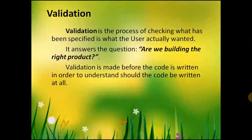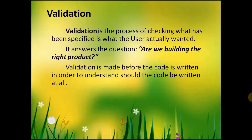Validation is the process of checking that what has been specified is what the user actually wanted. It answers the question: are we building the right product? Validation is made before the code is written, in order to understand should the code be written at all — should this product be on the market, or is it useless and users don't need it?